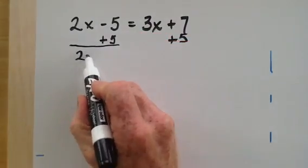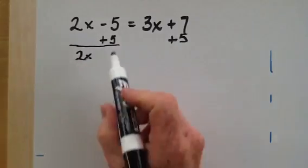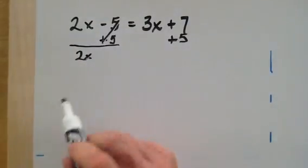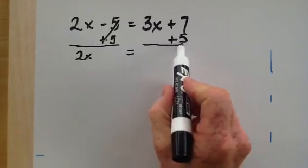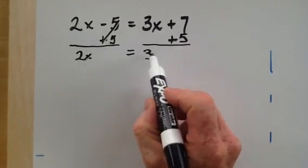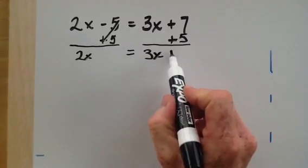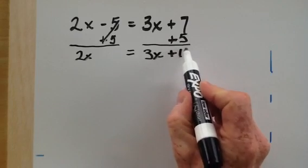Now if I do that, I end up with 2x here because I added nothing to it. These obviously cancel and it would give me 0, so I'll have 0 there. If I do that here, I get 3x. Again, I added nothing to it. And I get plus 12. 7 plus 5 is 12.